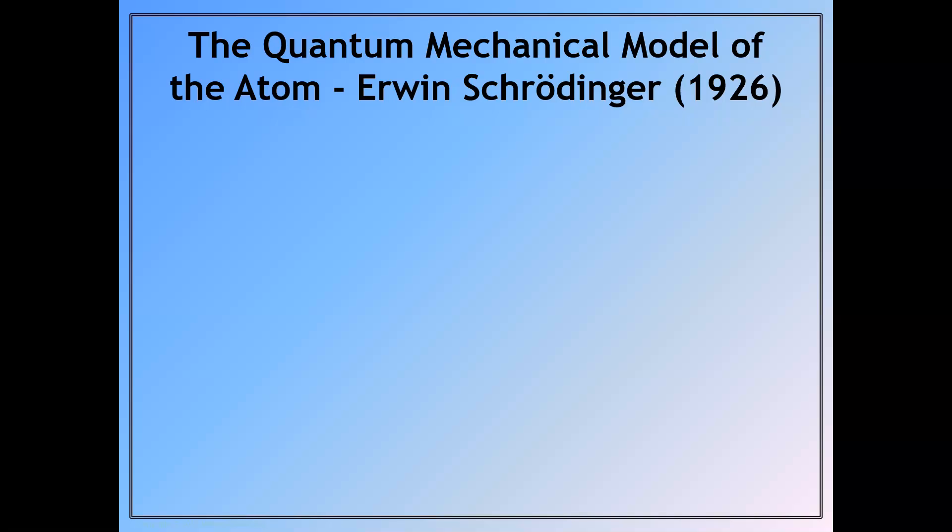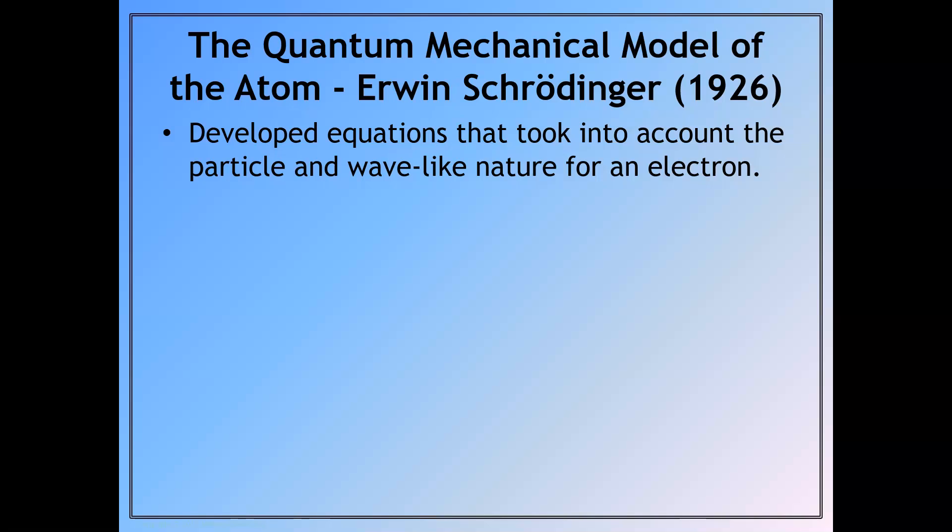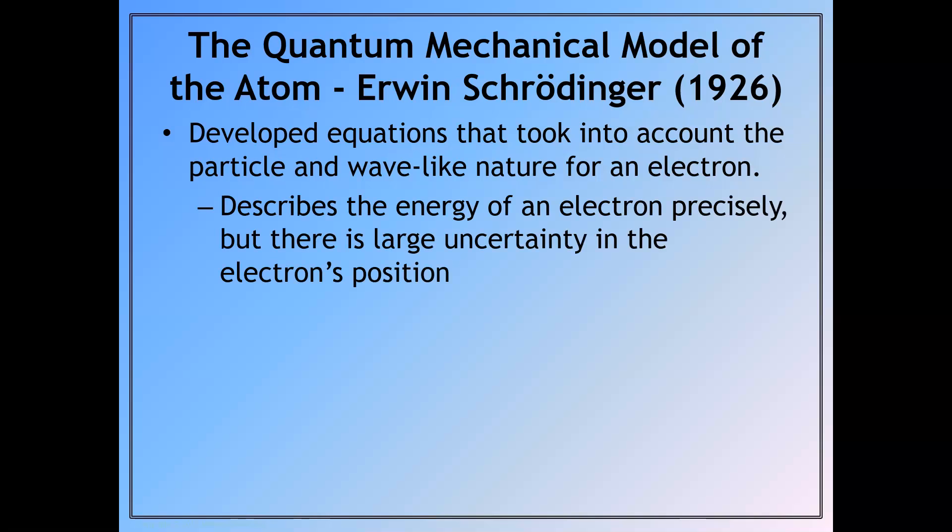Now we move into Schrödinger. And so in 1926, Erwin Schrödinger developed equations that took into account the particle and wave-like nature of an electron. It incorporated incredibly difficult calculus. And so we're not obviously going to discuss it here, but basically it describes the energy of an electron precisely.